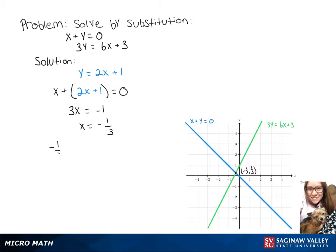So now we can take that x value and sub it into our first equation. So negative 1 third plus y equals 0. Add that 1 third over and our y value is 1 third.